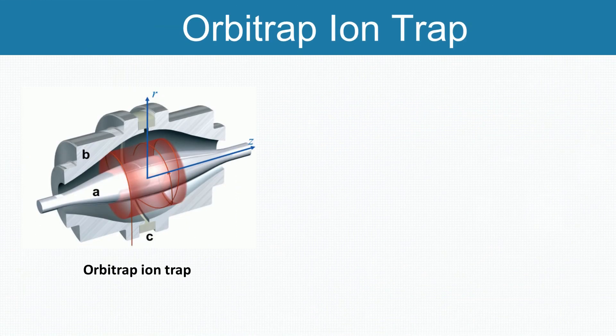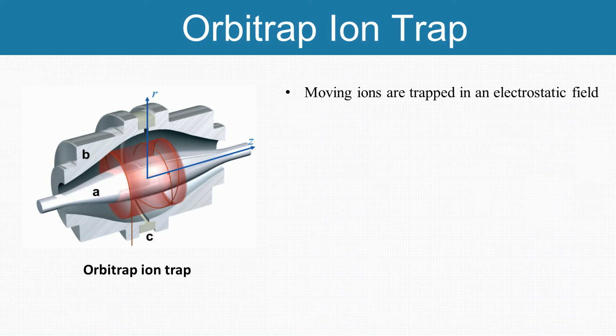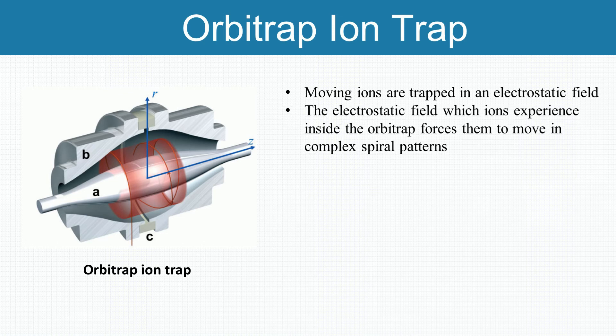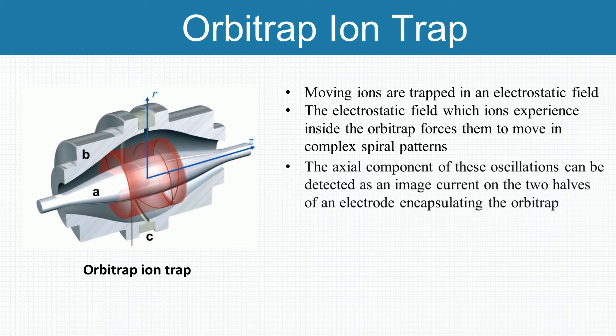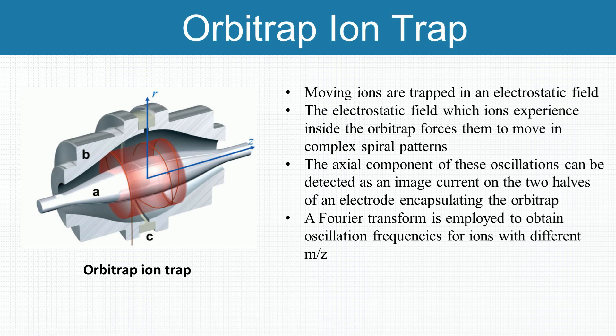Orbitrap is the newest high-resolution mass analyzer. In orbitrap, moving ions are trapped in an electrostatic field. The electrostatic attraction towards the central electrode is compensated by a centrifugal force that arises from the initial tangential velocity of ions. The electrostatic field which ions experience inside the orbitrap forces them to move in complex spiral patterns. The axial component of these oscillations can be detected as an image current on the two halves of an electrode encapsulating the orbitrap. A Fourier transform is employed to obtain oscillation frequencies for ions with different masses, resulting in an accurate reading of their mass-to-charge values.